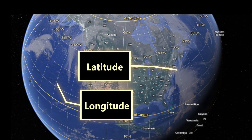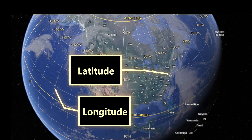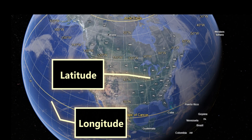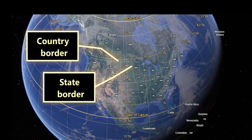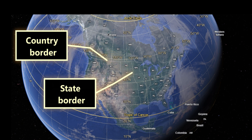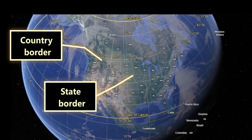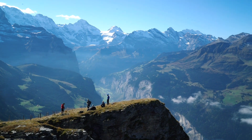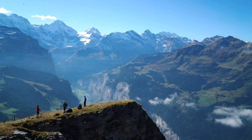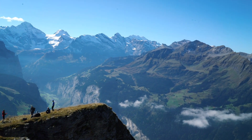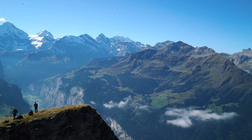Like many other lines common on maps, such as latitude, longitude, state, and country borders, contour lines are imaginary. They do not exist in nature. For example, there are no contour lines on these mountains or any other mountains.